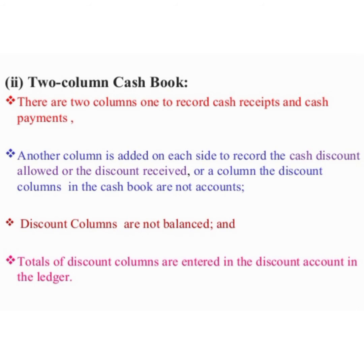Double column cash book is a book in which we record both cash transactions and bank transactions. There are two columns of amount on each side. Nowadays bank transactions are very large in number; in many organizations all receipts and payments are affected through bank. A businessman generally opens a current account with a bank. The bank does not allow any interest on the balance in the current account but charges a small amount called incidental charges. For depositing cash or check in the bank account, a form has to be filled called a paying slip, which contains a counterfoil returned to the customer with the signature of the cashier.